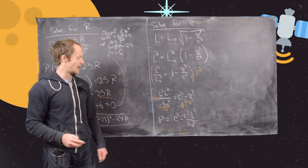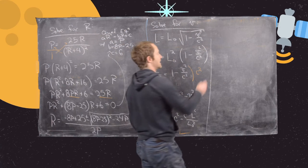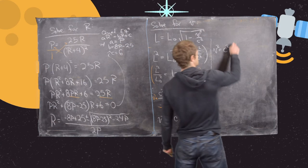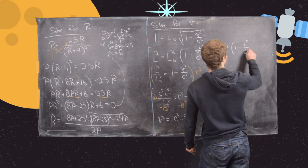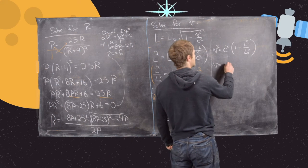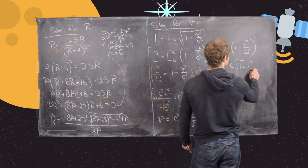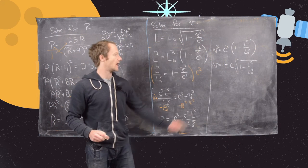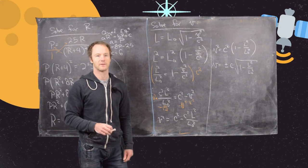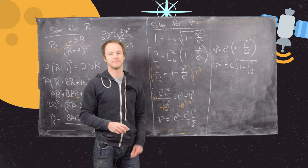We can factor C squared out of the right-hand side, giving V squared equals C squared times (1 minus L squared over L₀ squared). Taking the square root of both sides, V equals plus or minus C times the square root of (1 minus L squared over L₀ squared). Generally we take the positive square root, since this is an example from special relativity involving length contraction at velocity V.